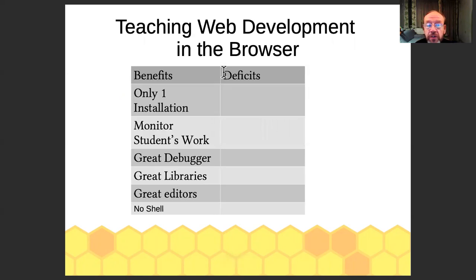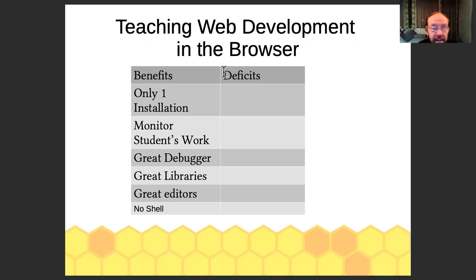What you really want to do is web development in the browser — the benefits are overwhelming. Again, you only need one installation, you can monitor the student's work, you have great debuggers like Google Chrome for JavaScript, great libraries, great editors, no shell. The Forest Wiki is one of the few platforms that actually does both general web development and teaches Python in the browser.